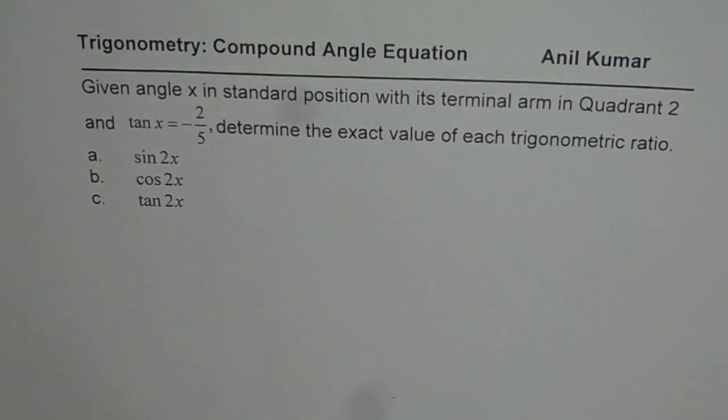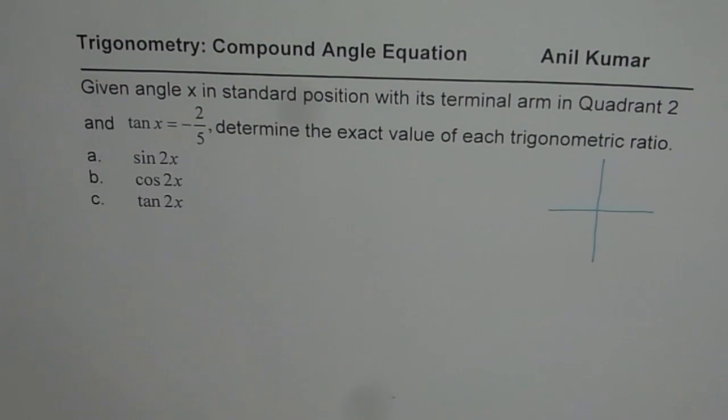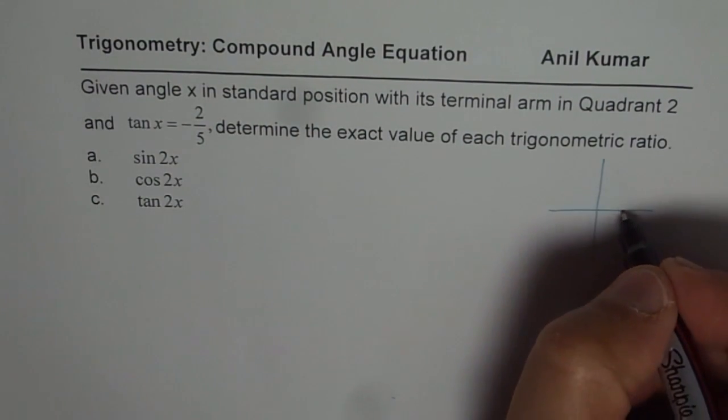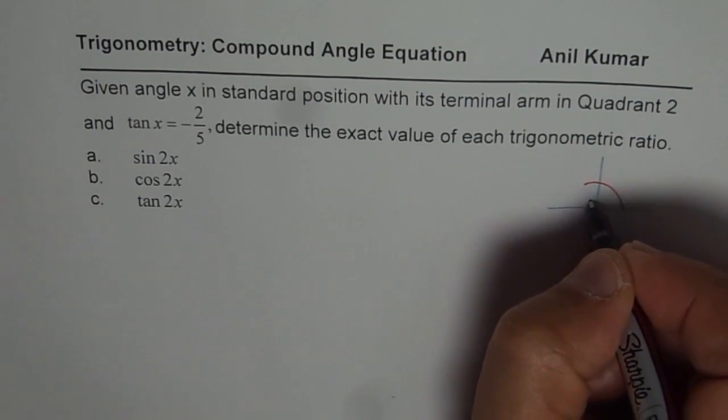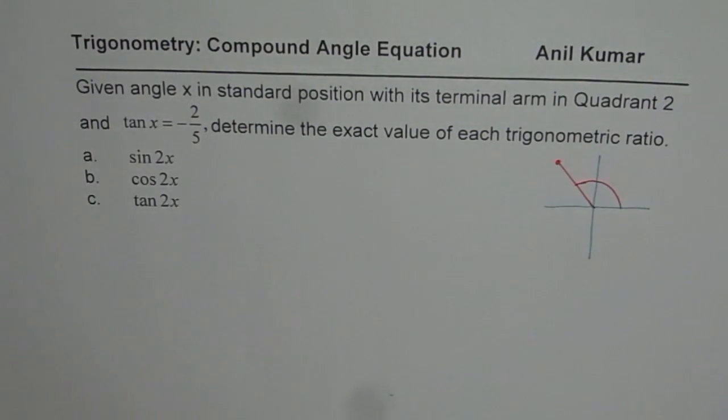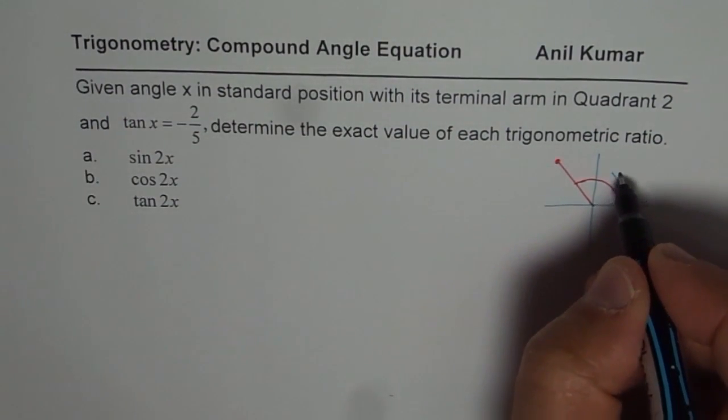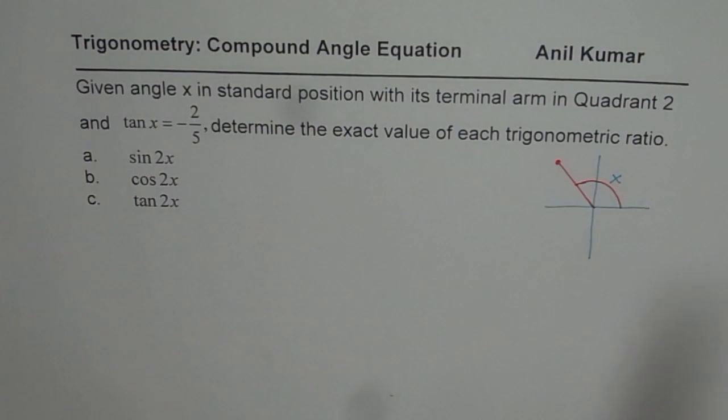We need to find sin 2x, cos 2x, and tan 2x. We know that the angle x is in quadrant 2, that's the principal angle. So that's the terminal arm where the value of tan x, so this angle is x, the value of tan x is minus 2 over 5.